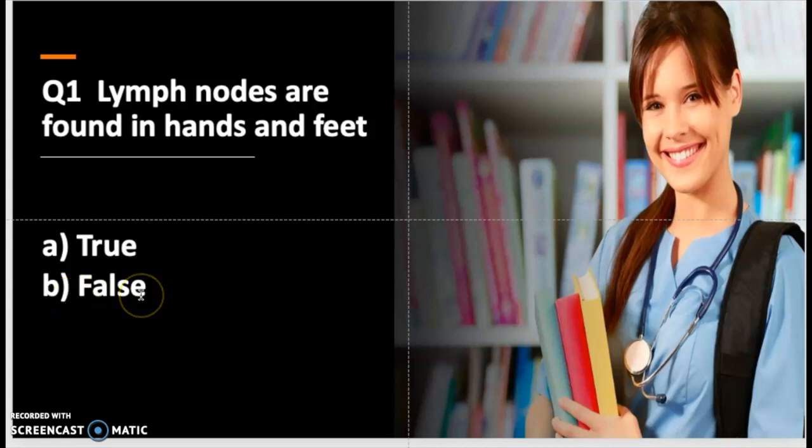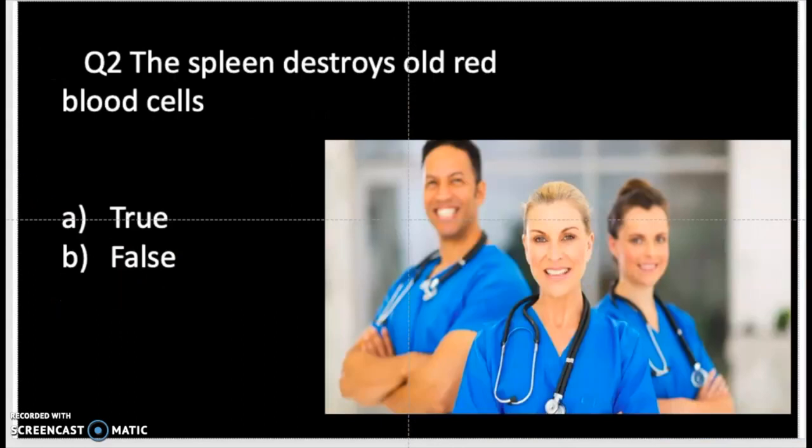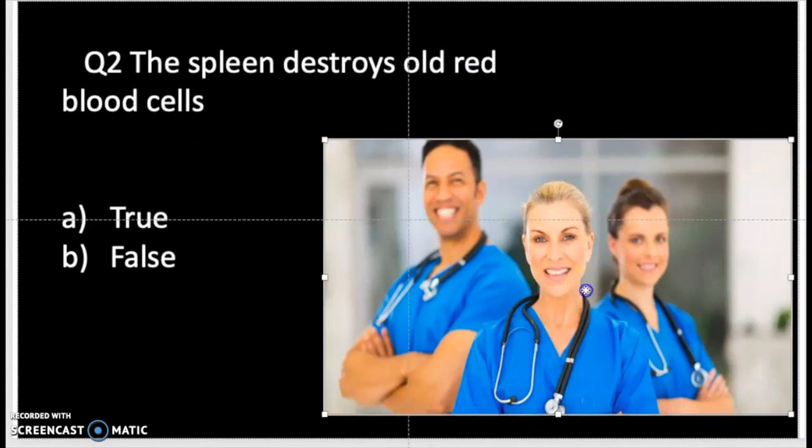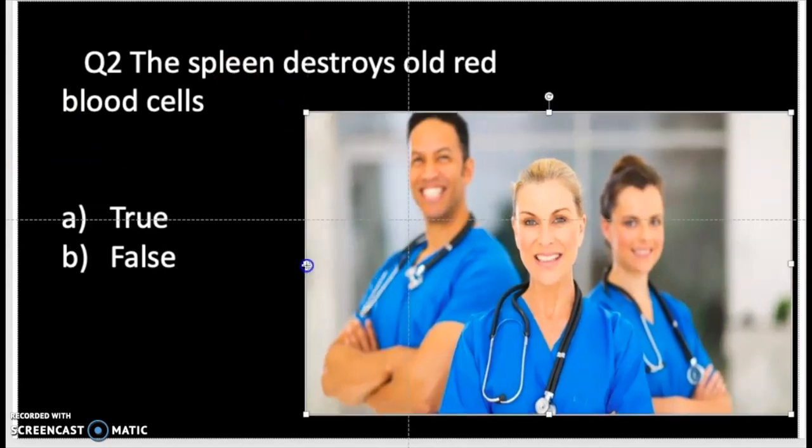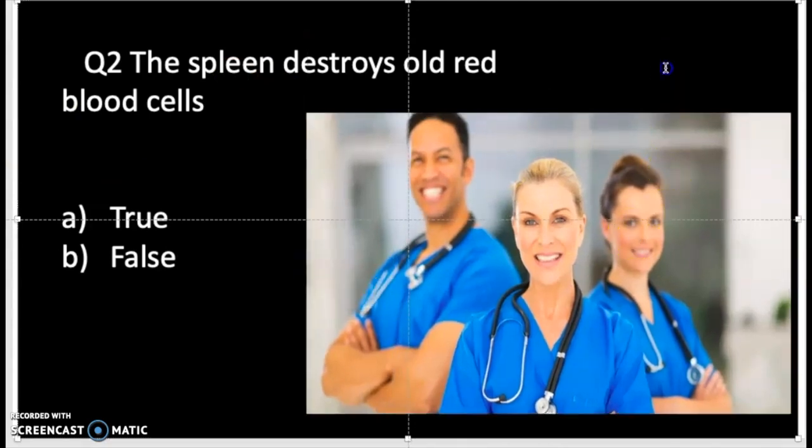Question number two: the spleen destroys all red blood cells. We talked about this question in class. I stated that the spleen is very rich in blood supply. The spleen does destroy all blood cells, so this is true.